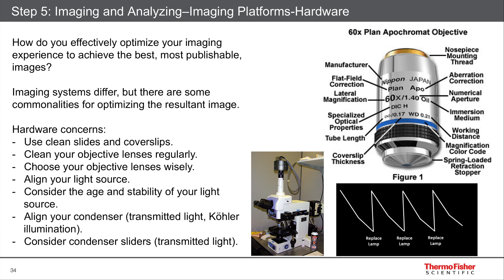Now let's talk about the instruments and the software. Here you can see an image of a typical objective lens used in a microscope. There are a lot of different aspects in choosing an objective, but generally you want to go with the best possible one. Usually an apochromatic, S-apo, or super-apochromatic is your best choice because it corrects for chromatic aberrations and planar aberrations, giving you a nice, uniform image that co-localizes between colors easily. Consider the magnification you need — using oil will give you a brighter, more resolved image, but oil has its own issues.